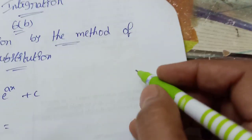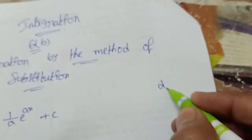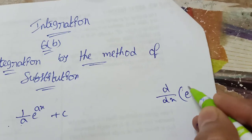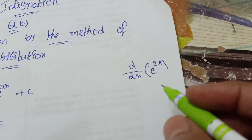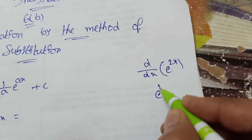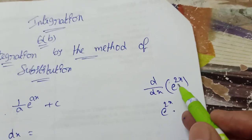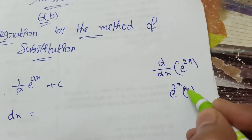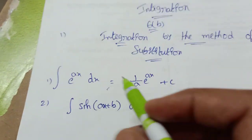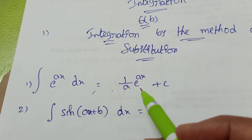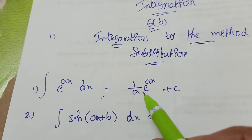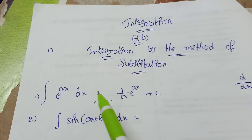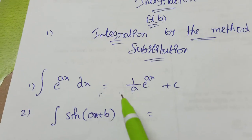It's important to understand the difference between derivatives and integration. For example, d/dx of e^(2x) gives e^(2x) multiplied by 2. In integration, it's the inverse: we divide by that coefficient. Integration is the inverse of differentiation.